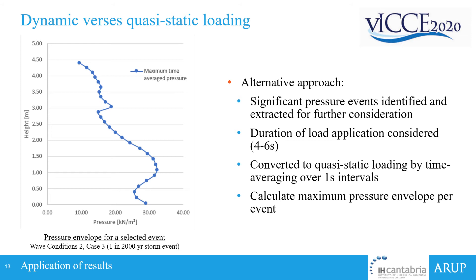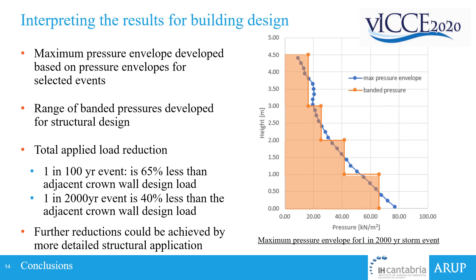We also checked the duration of the loads and cross-checked this against the natural frequency of the structure. We then converted to quasi-static loading by time-averaging the loads over one second and calculated the maximum pressure envelope per event per node of the model. The graph shown here on the left shows the pressure envelope for a particular selected event within the 1-in-2000-year storm sea state, and the maximum time-averaged pressure during that particular event at each node.